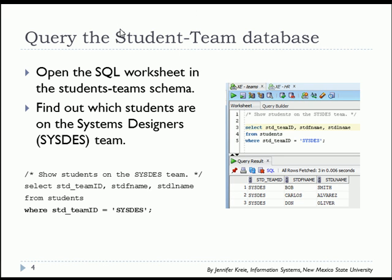In our example here, we're going to SELECT and specify three columns: student ID, first name, last name from the students table, and filter based on team ID equal to SYSDESK.